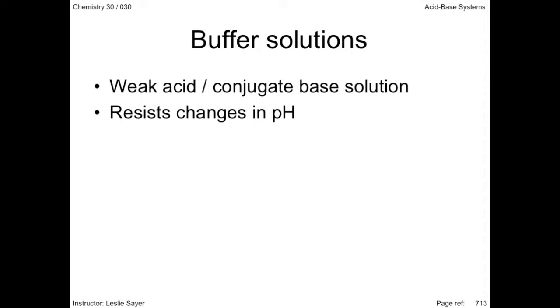For example, if a liter of water has added to it 10 milliliters of 1 mole per liter hydrochloric acid solution, the pH would drop from 7 to 4. Add a buffer to the water and the pH would drop to only 6.9.